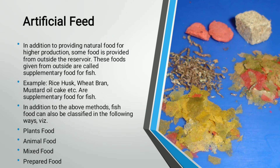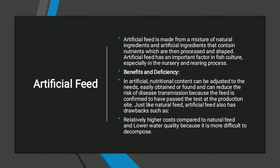In addition to the above methods, fish food can also be classified as plant food, animal food, mixed food, and prepared food — all prepared artificially and given to fishes. Artificial feed is made from a mixture of natural and artificial ingredients that contain nutrients, which are then processed and shaped. Artificial feed has an important role in fish culture: if you control the right amount of feed, you can increase productivity as well as the beneficial cost of the culture medium. The nutritional content can be adjusted to the fish's needs.